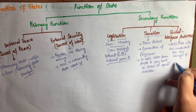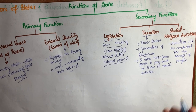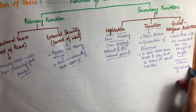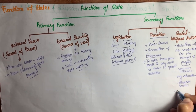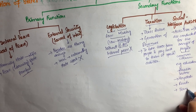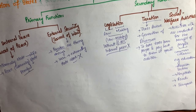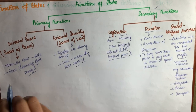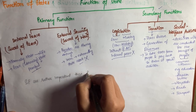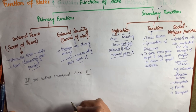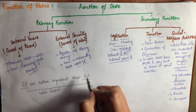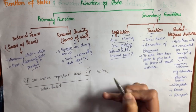Social welfare activities include education, the health sector, hospitals, roads, and transport. These are performed by the government. Secondary functions are actually more important than primary functions because the two are interlinked — if the state does not perform its primary functions, then the state cannot be called a powerful or peaceful state.